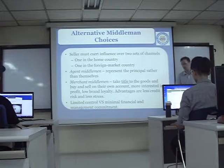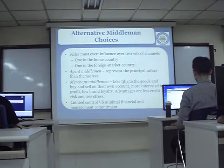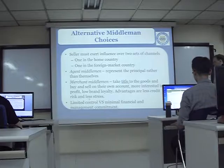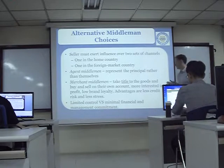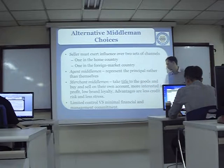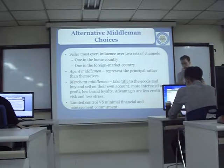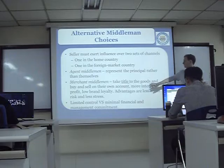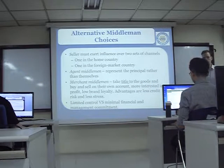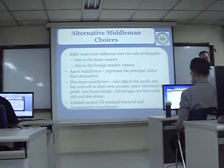The merchant takes title to the goods and buys and sells on their own account. They are more interested in profit and have low brand loyalty. Advantages are less credit risk and less stress. So we have these two things which play out: limited control versus minimal financial and management commitment. A problem with the merchant middleman is that they can get our product, but they don't carry just our product — they buy a lot of other products.